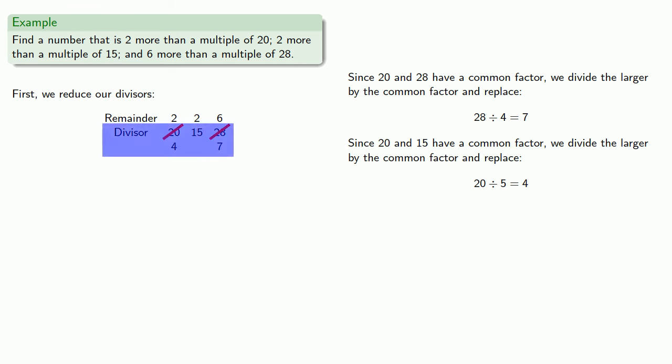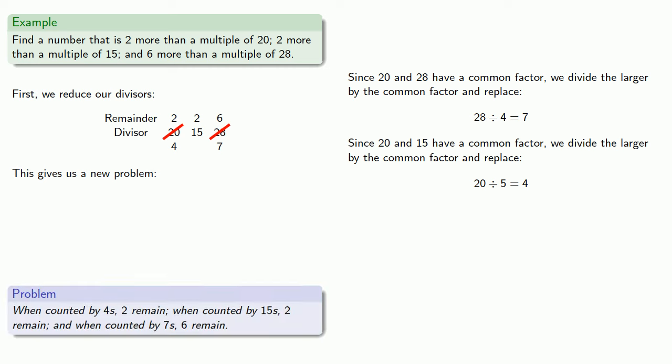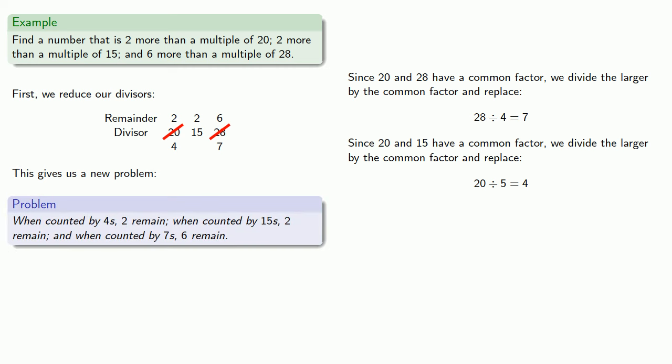So now we have a new set of divisors. The remainders for now remain the same and our new problem: when counted by 4s, 2 remain; when counted by 15s, 2 remain; and when counted by 7s, 6 remain.